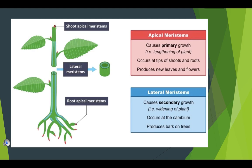In plants, the cells at the growing points, called meristems, divide very rapidly and produce new leaves, buds, and flowers.